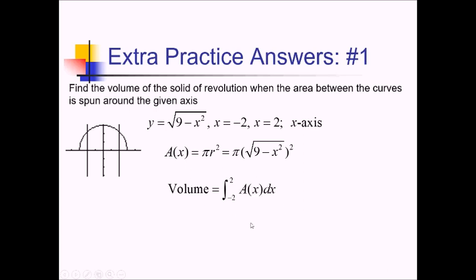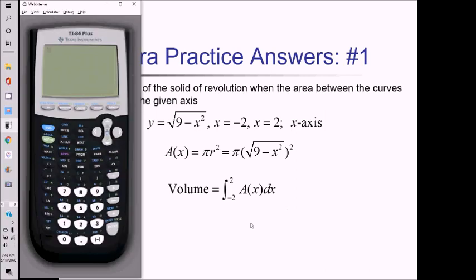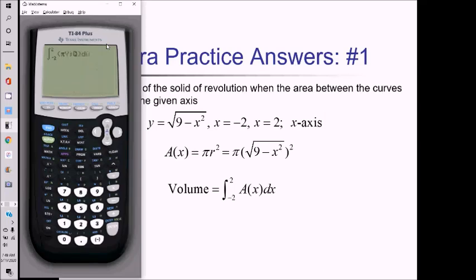Let's see what the calculator has to say about all this. I'm going to do math 9 to get my integral, going from negative 2 to positive 2 for my limits of integration. Inside, I've got A of x — that's going to be pi times this y function squared. I stored this whole thing as Y1, so I'm just going to do alpha trace and pull up Y1 from that menu, then square it because it was pi r squared. Put a dx out there, press enter, and we get 96.342.